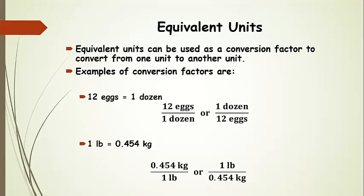A couple of examples of conversion factors: 12 eggs is equal to one dozen. Here we have 12 eggs on top — they're equal quantities, two different units, one on top of the other. We can also write it the other way: one dozen on top, 12 eggs on the bottom. We can do the same thing with pounds and kilograms — 0.454 kilograms on top and one pound on the bottom, or the other way around.